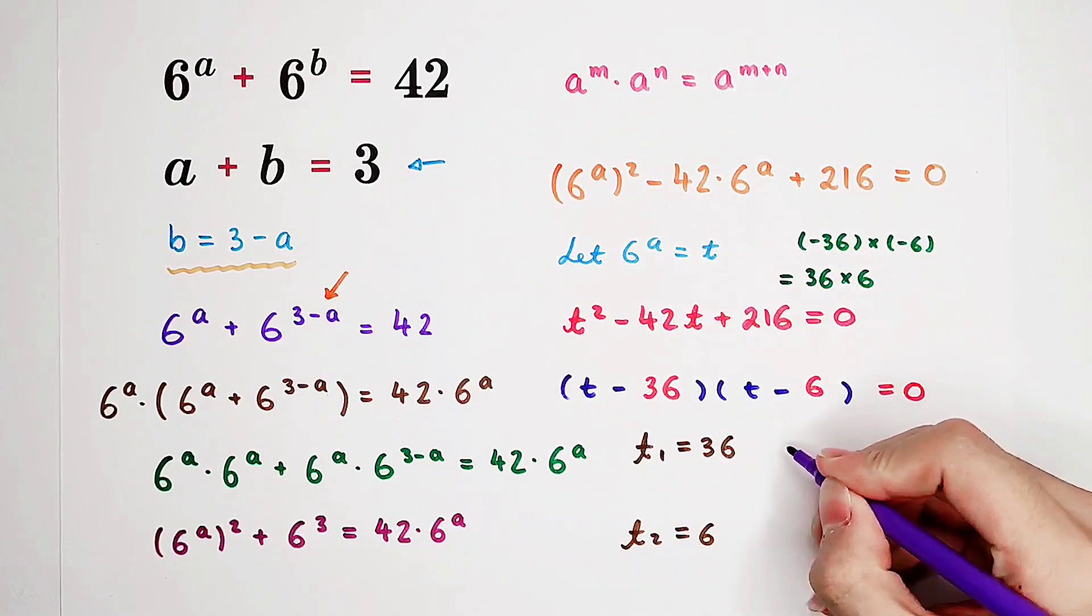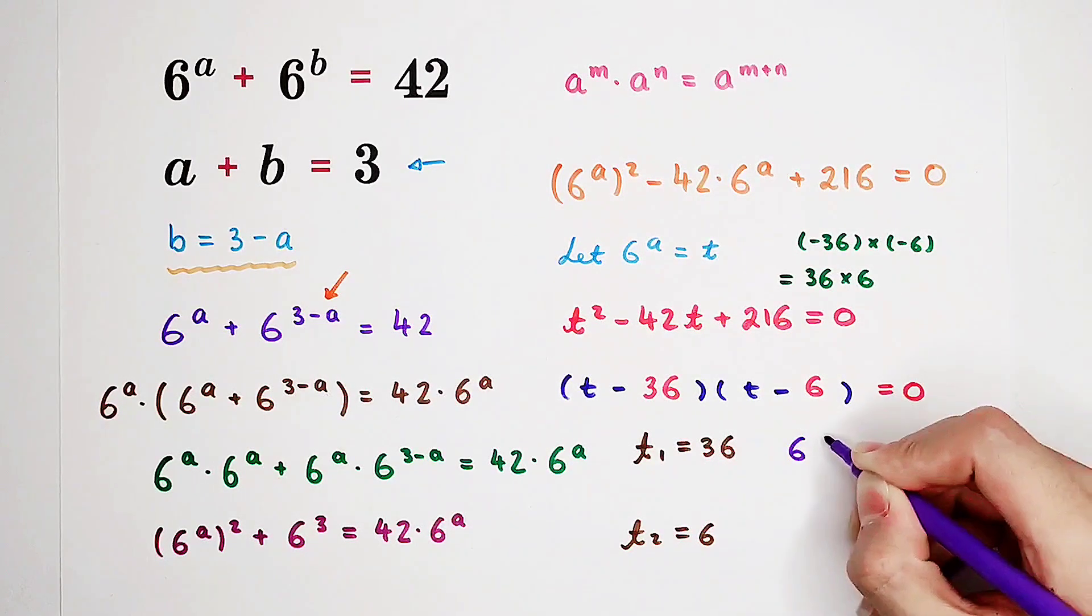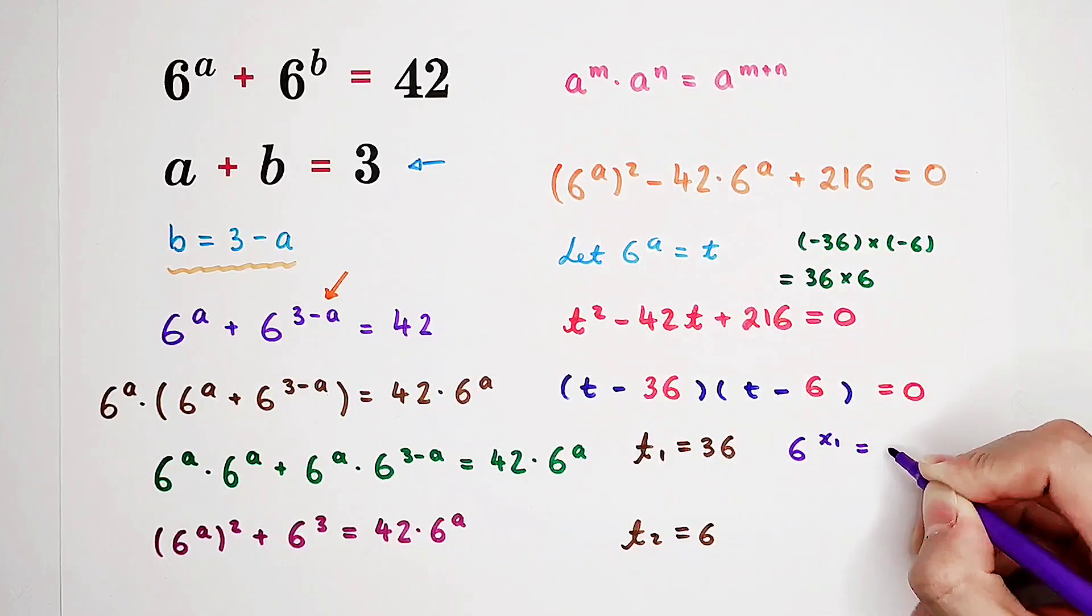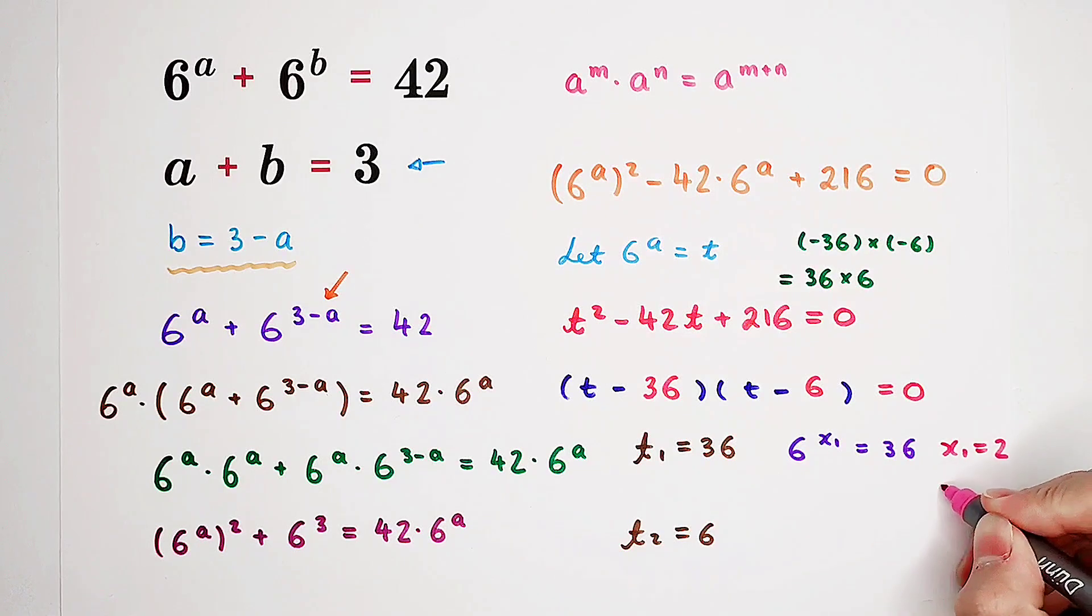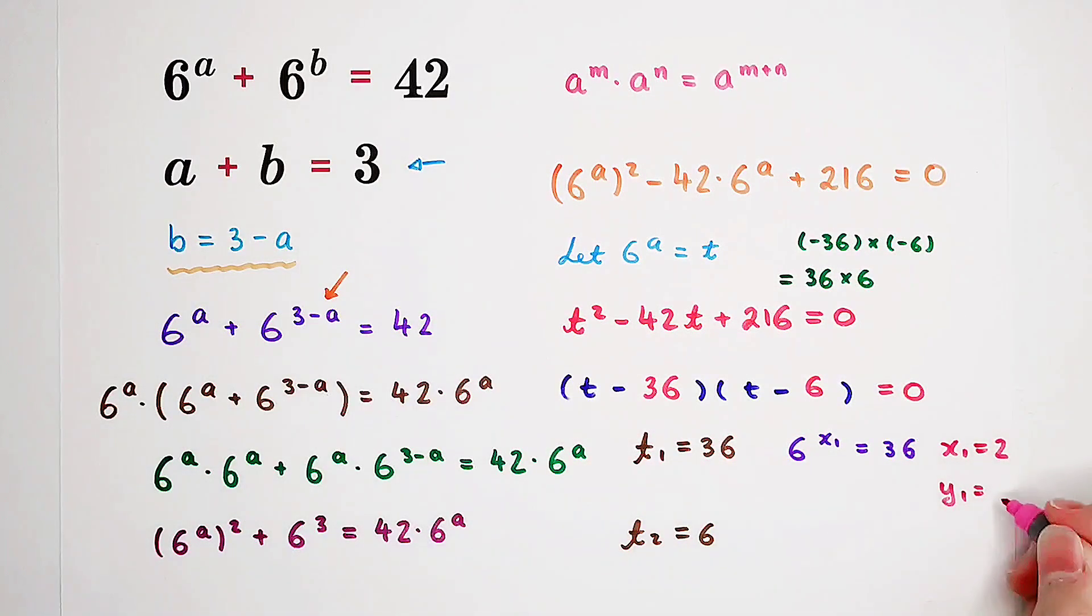So, that means for T1, 6 to the power of X1 equals 36. That means X1 is, of course, 2. And Y1 is, of course, 3 minus 2 is 1. For our second case, 6 to the power of X2 equals 6. X2 is 1. And Y2 is 2.